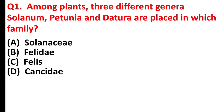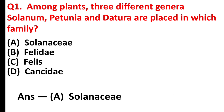Among plants, three different genera — Solanum, Petunia, and Datura — are placed in which family? Answer is option A: Solanaceae.